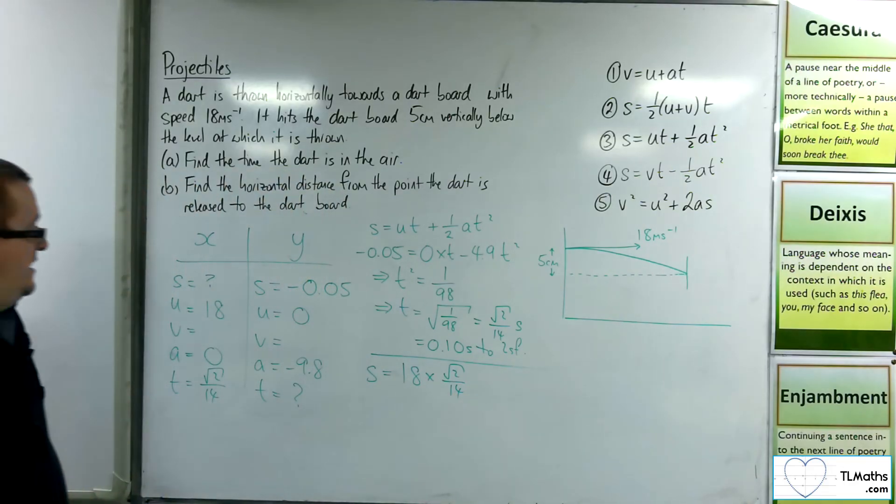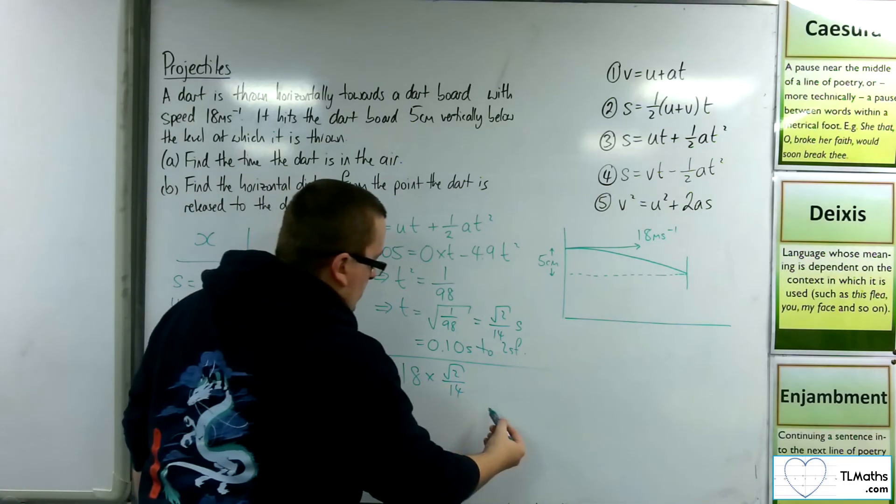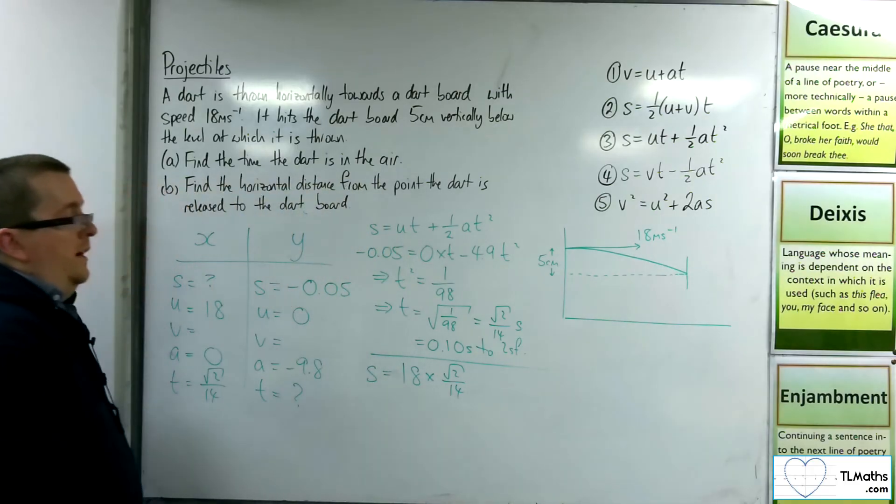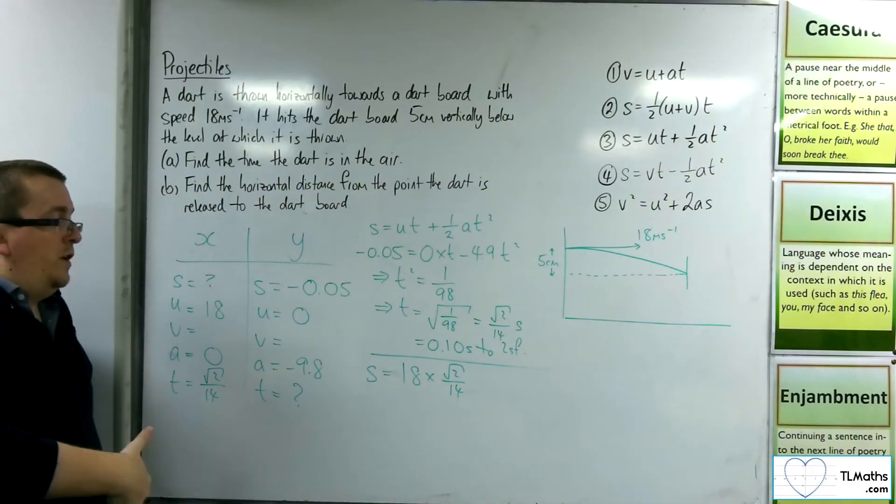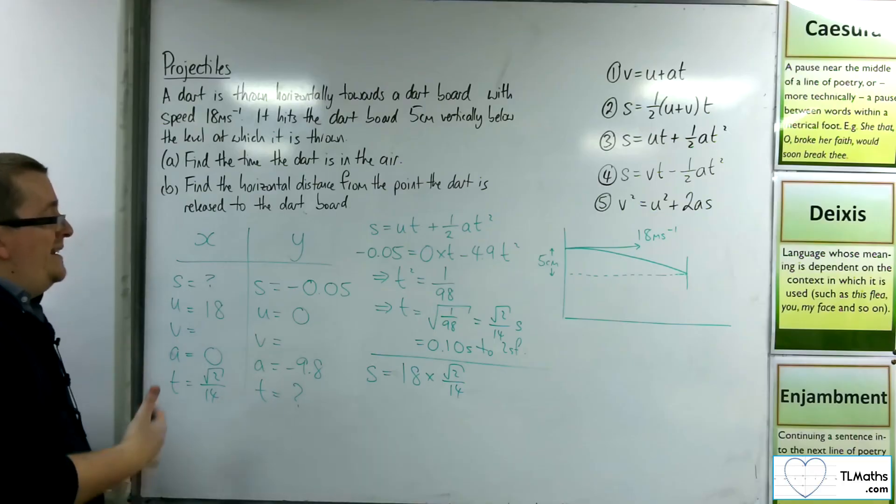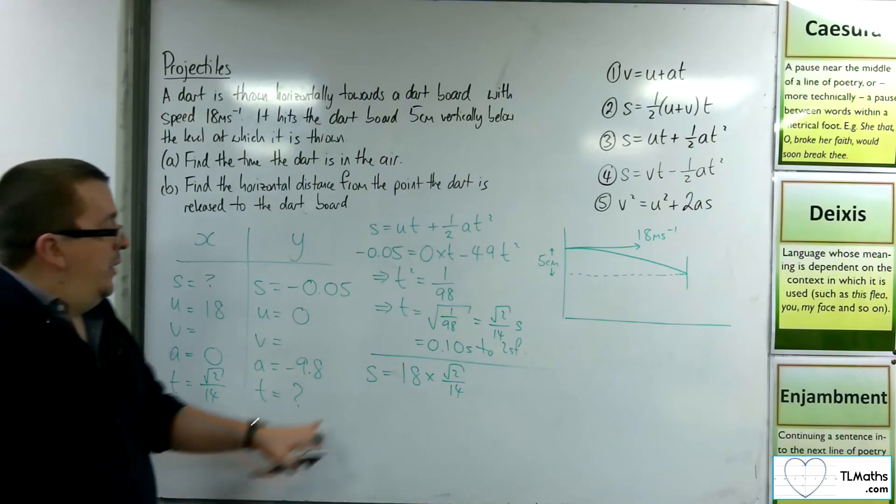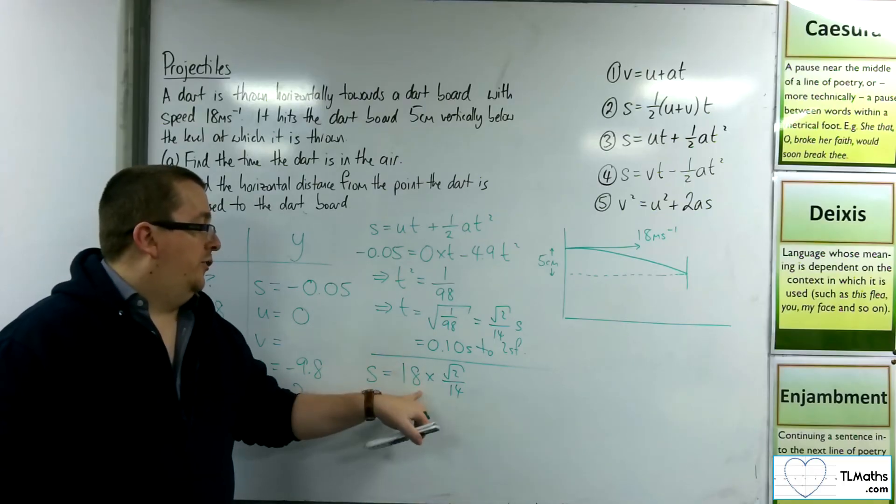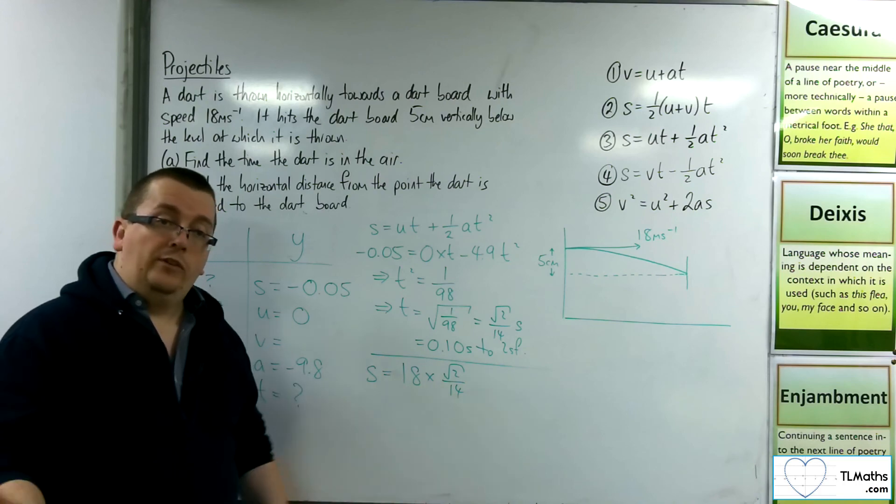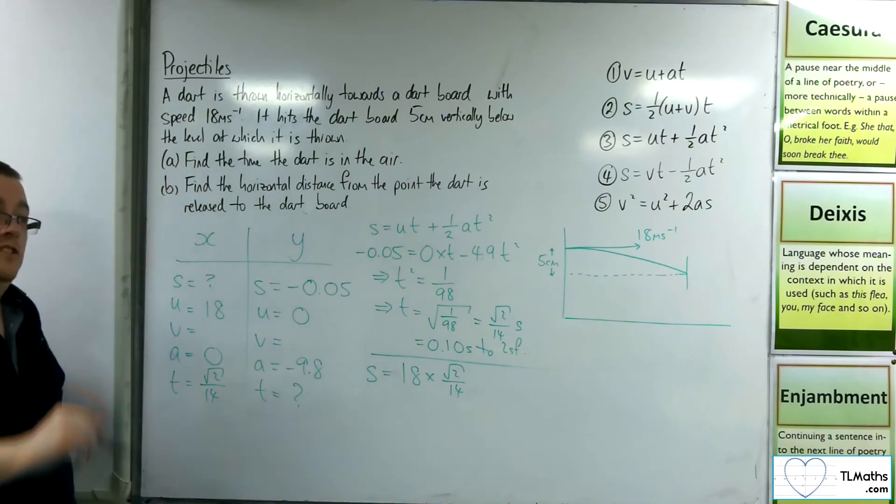So 18 plus half a t squared, a is 0. And so we just get plus 0 in the end. And of course, this is because the acceleration is 0. The speed is unchanging. So distance is speed times time, using the speed distance time triangle.